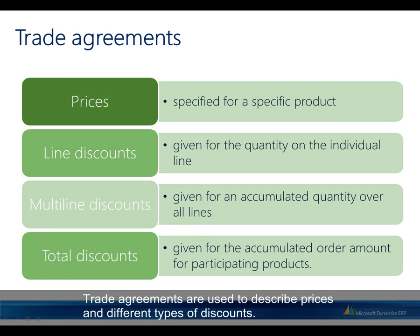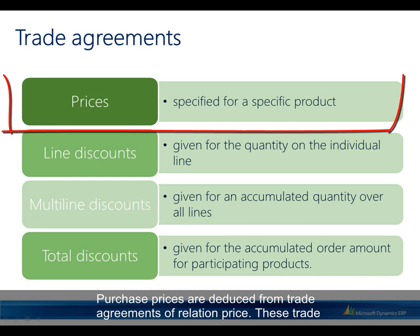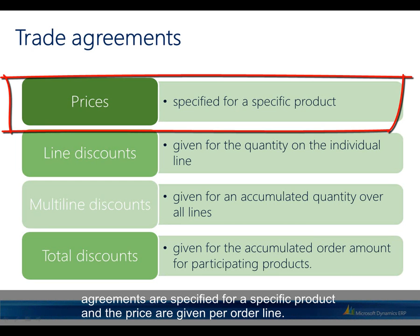Trade agreements are used to describe prices and different types of discounts. Purchase prices are deduced from trade agreements of relation price. These trade agreements are specified for a specific product and the price is given per order line.